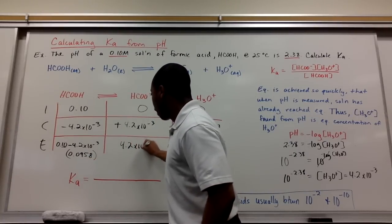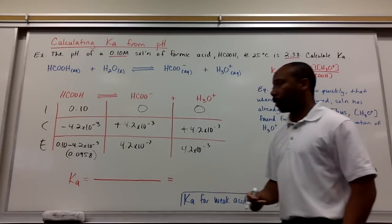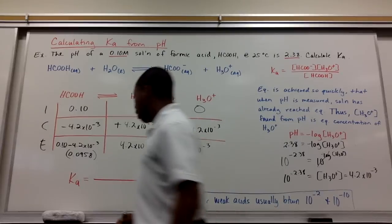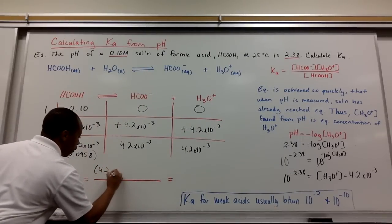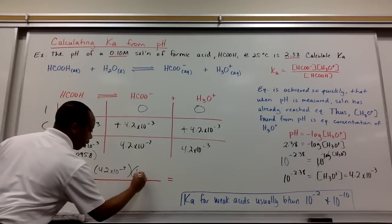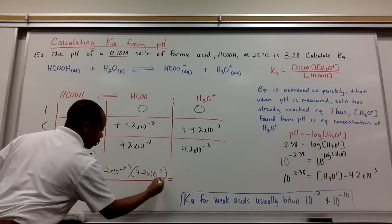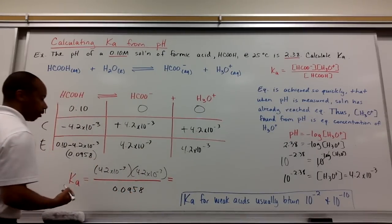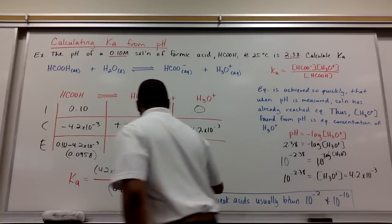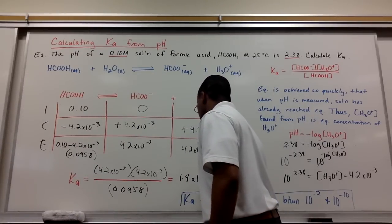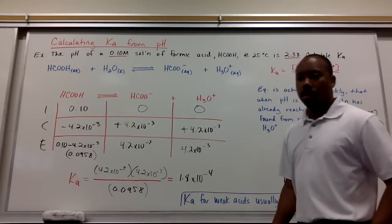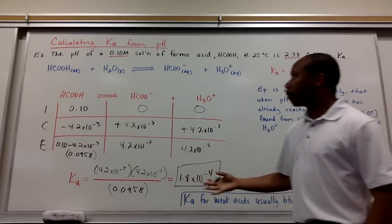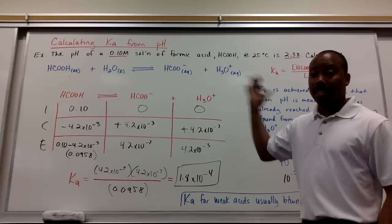Here is 4.2 times 10 to the negative 3rd, and 4.2 times 10 to the negative 3rd. I can input this into my equilibrium expression. K sub A. 4.2 times 10 to the negative 3rd squared over 0.0958. And I get approximately 1.8 times 10 to the negative 4th as my K sub A. So that is how you would calculate K sub A from a pH and an initial concentration.